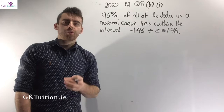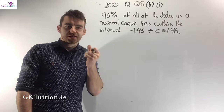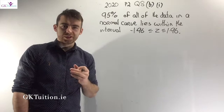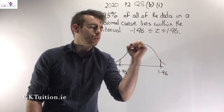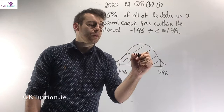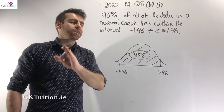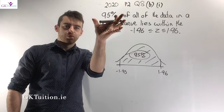In part B1 we're asked to explain the relevance of −1.96 and +1.96 in a standard normal distribution. The proportion of figures in any normal curve that lie within 1.96 standard deviations of the mean is 95%. So 95% of all data lies between −1.96 and +1.96, which can also be illustrated with a graph.